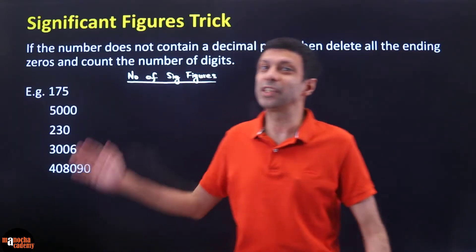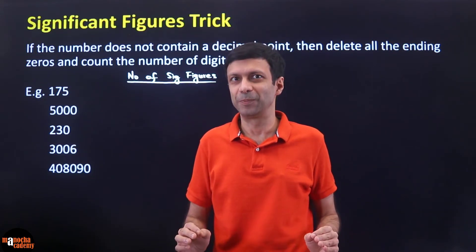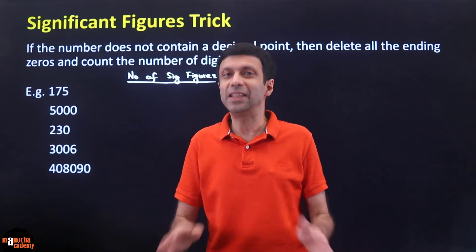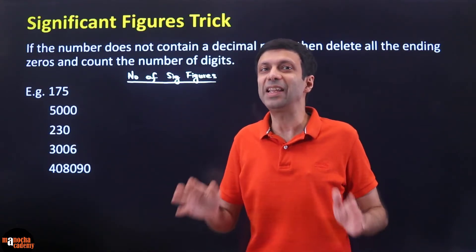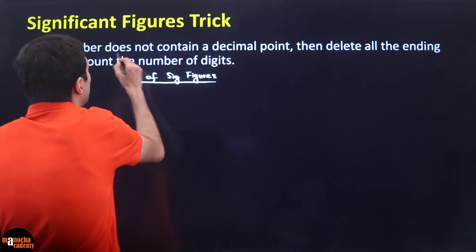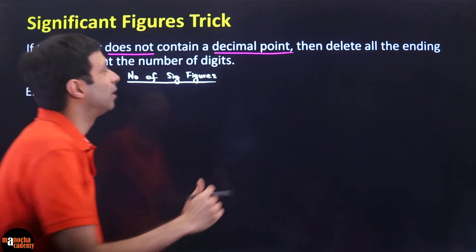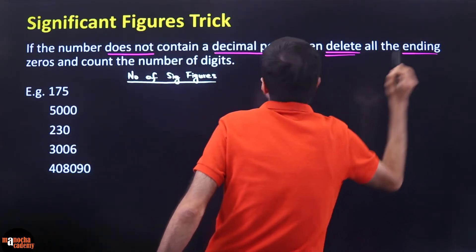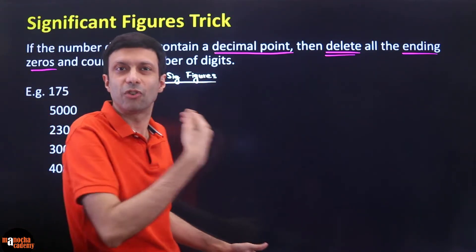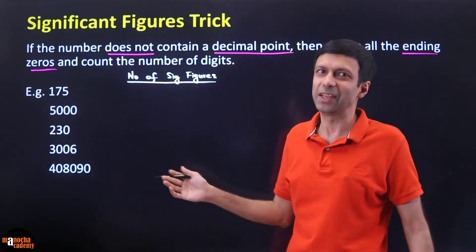Let's look at the first trick for significant figures. If you are given a number that does not have any decimal point, then what should you do to calculate the significant figures? Very simple — just delete all the ending zeros and count the number of digits. Simply delete all the ending or trailing zeros, count the number of digits, and you are done.